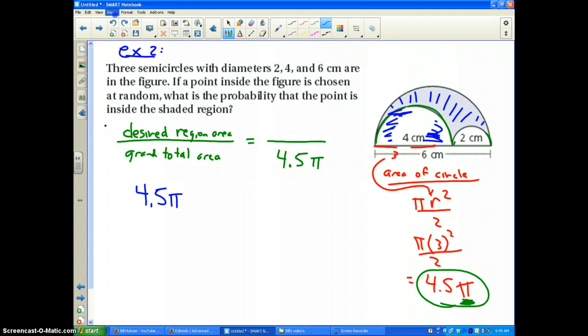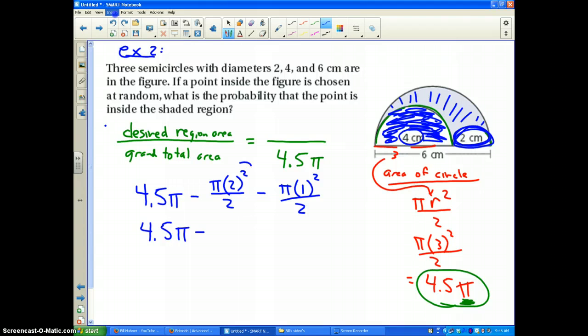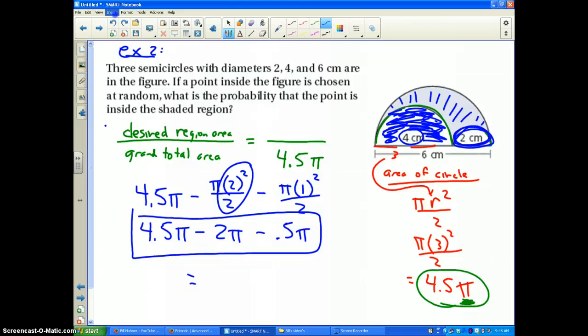The area of the large circle, we've already figured that out, 4.5 pi. Now, what we need to do is find this region right here because we've got to minus that piece off. It's got a diameter of 4, which makes its radius 2. So I'm going to minus off pi times 2 squared, the whole thing divided by 2, since it's half a circle. And now the last piece has a diameter of 2, which makes its radius 1. So I've got to minus off pi times 1 squared divided by 2. So I get 4.5 pi minus 2 pi minus a half pi.